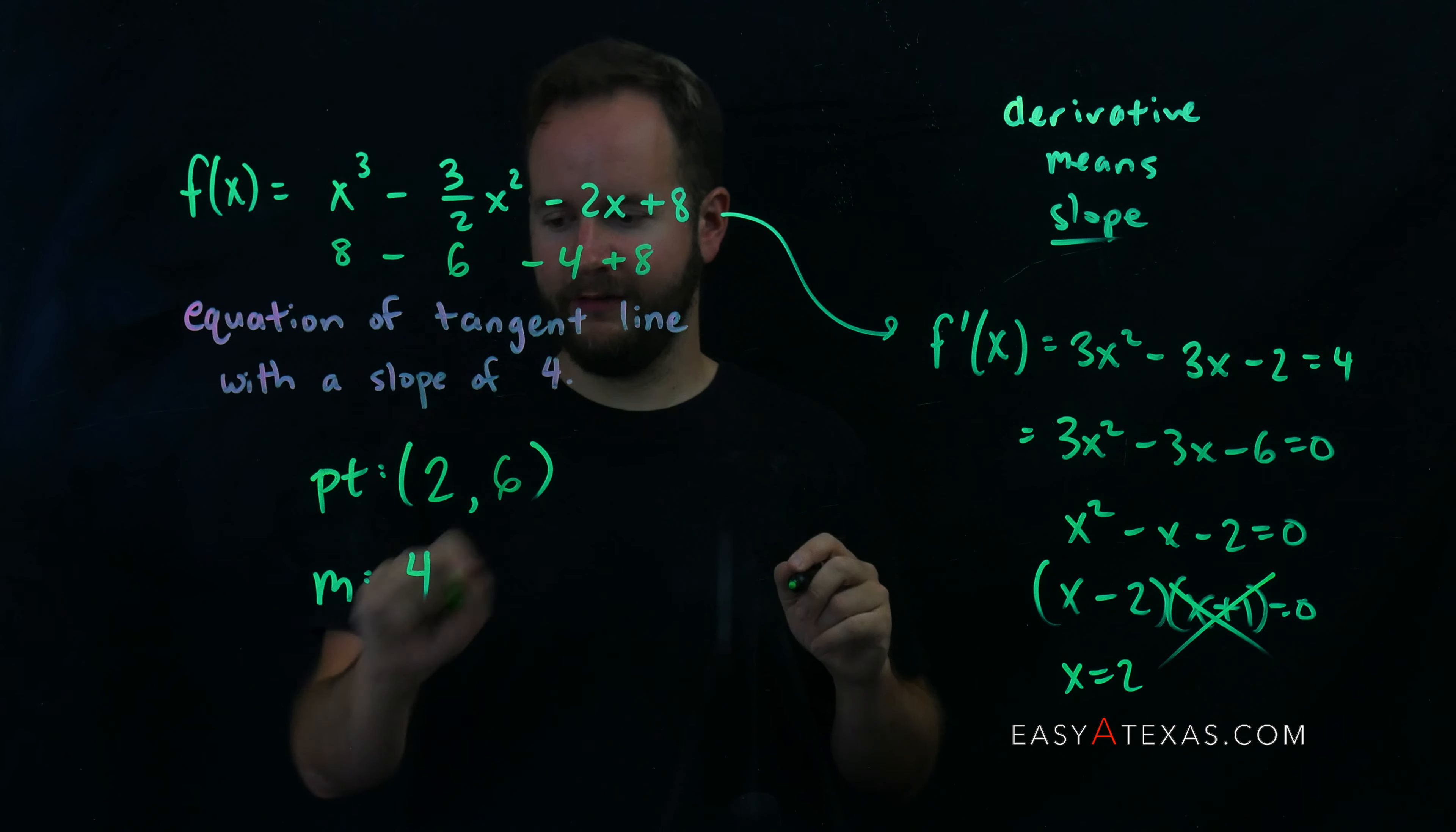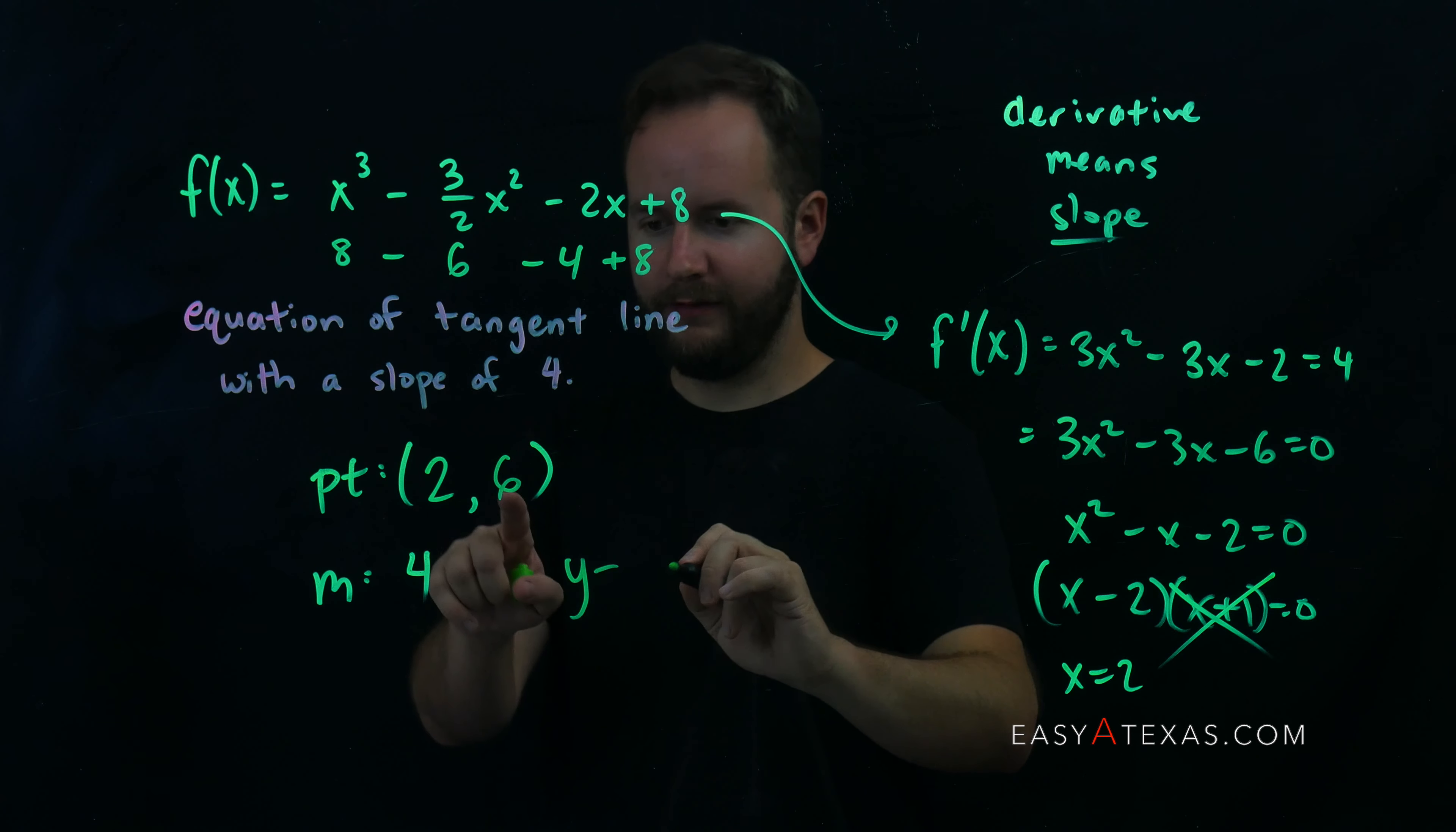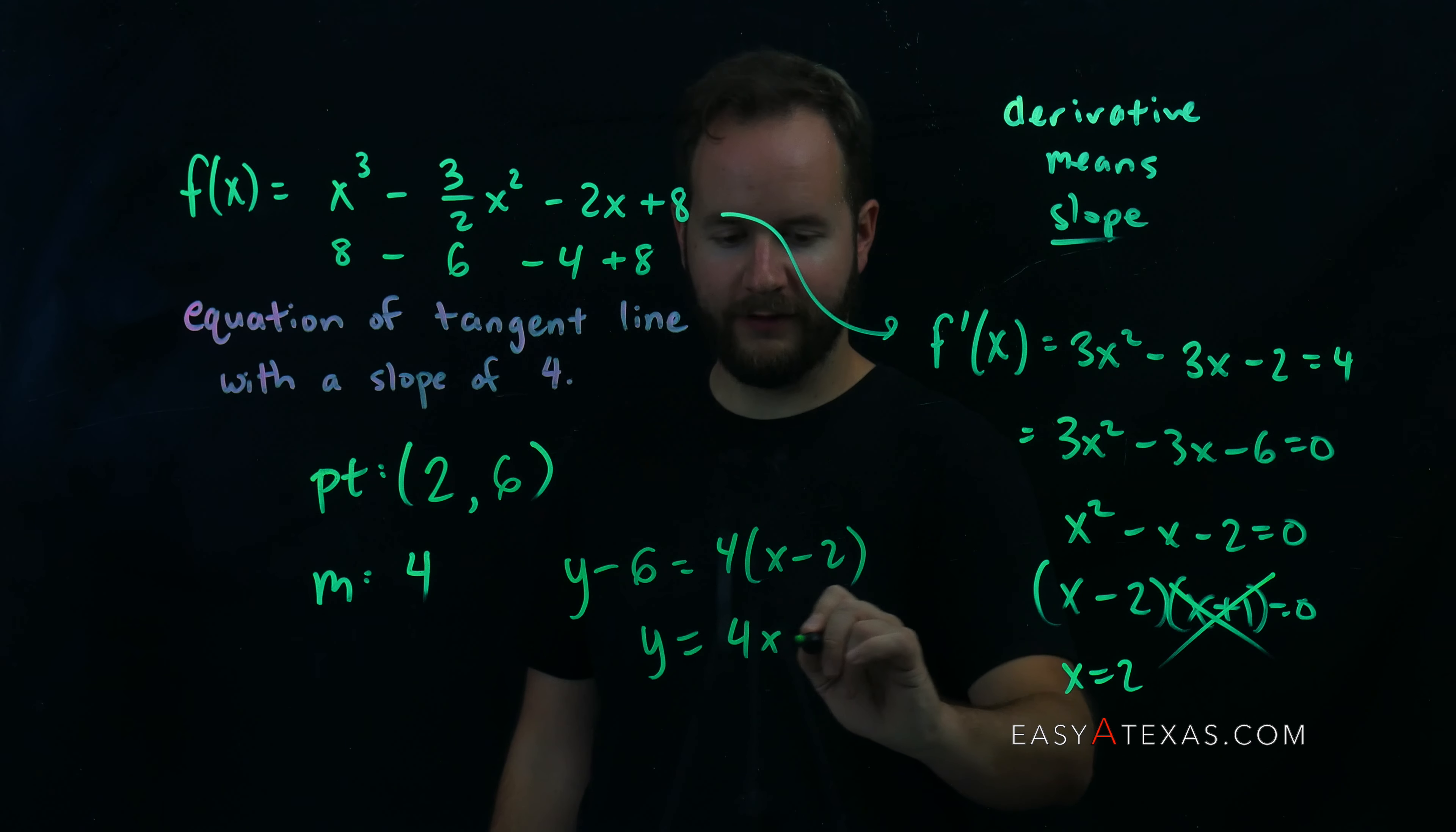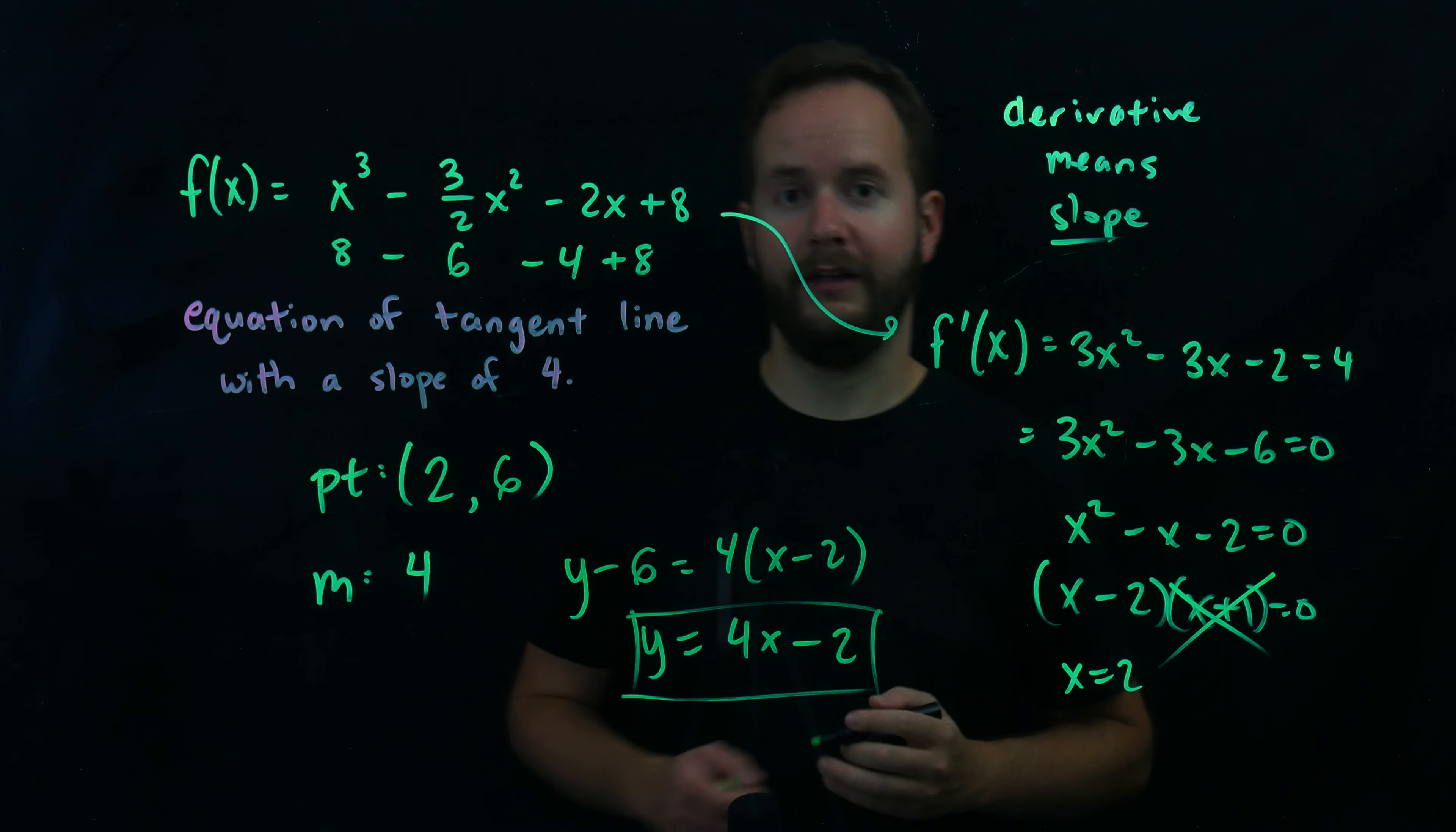So we have 2, 6 and a slope of 4. Now we have to finally make the equation of the line. That's going to be y minus 6 equals slope times x minus 2. To give me a final answer of y equals 4x minus 8 plus 6 is minus 2. This is your final answer.